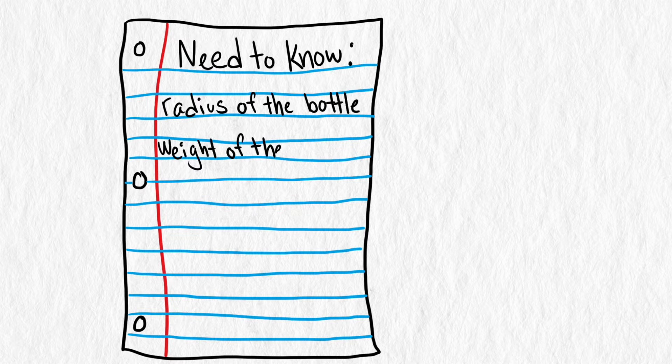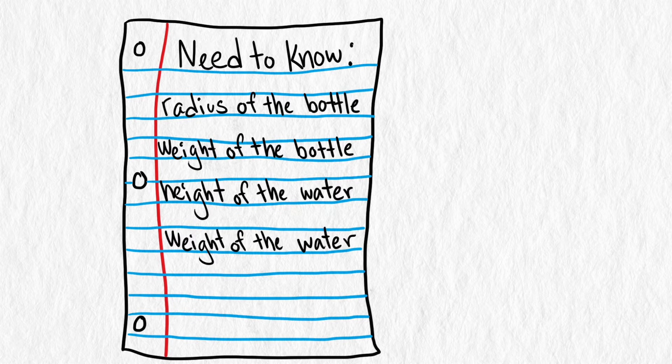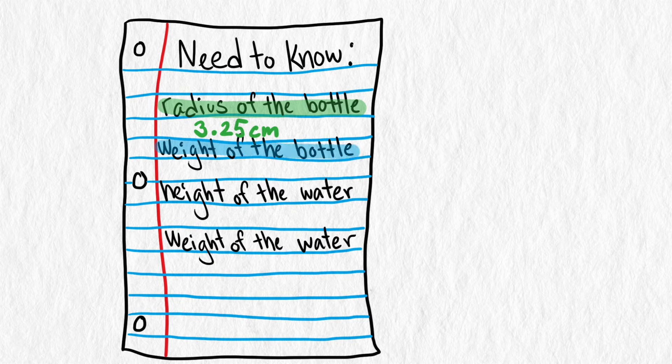There are some values we need to know: the radius of the bottle, the weight of the bottle, the height of the water, and the weight of the water. The first two are measurements I can take or look up. My water bottle is about 6.5 cm in diameter, so 3.25 cm in radius. I looked up the weight of the water bottles, and 10 grams was typical.